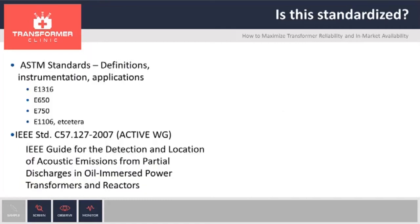This is normalized. We have ASTM standards that talk about frequency to be used, type of sensors, et cetera. But most importantly for us, we have an IEEE standard C57-127. This is an active standard. It's not a mandatory standard — it's just a guideline. Please note that this standard only talks about partial discharge. It doesn't talk about other types of defects that you can find. This standard is being reviewed, and we are part of that review committee.